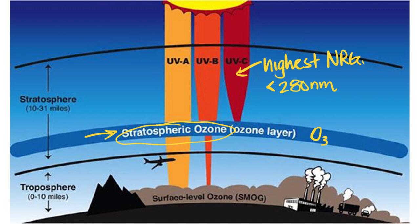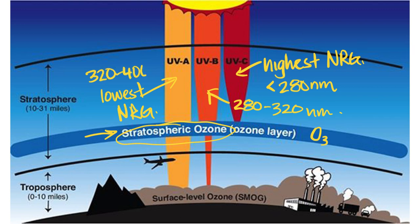For UVB rays, they're our next highest energy. They have wavelengths in around the 280 to 320 nanometer range. And then our UVA rays are our lowest energy. They are anywhere from about 320 to 400 nanometers wavelengths.